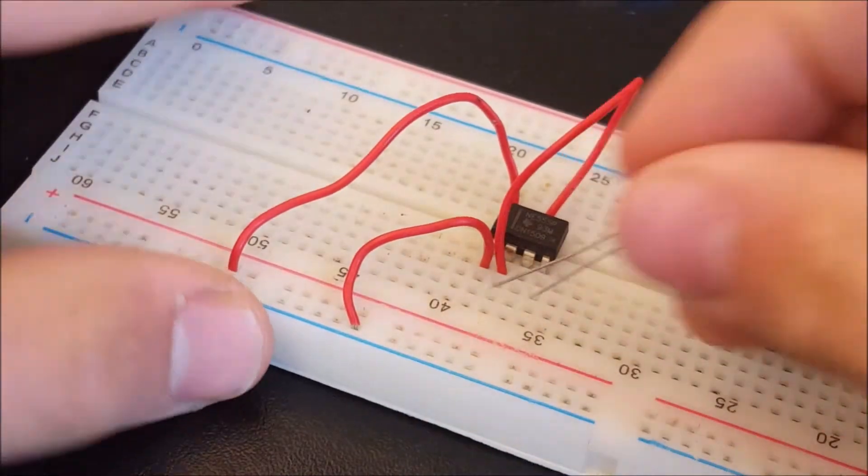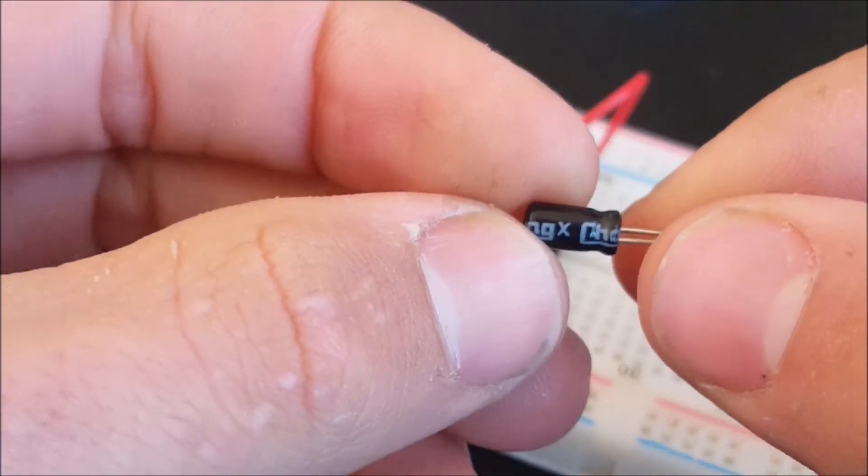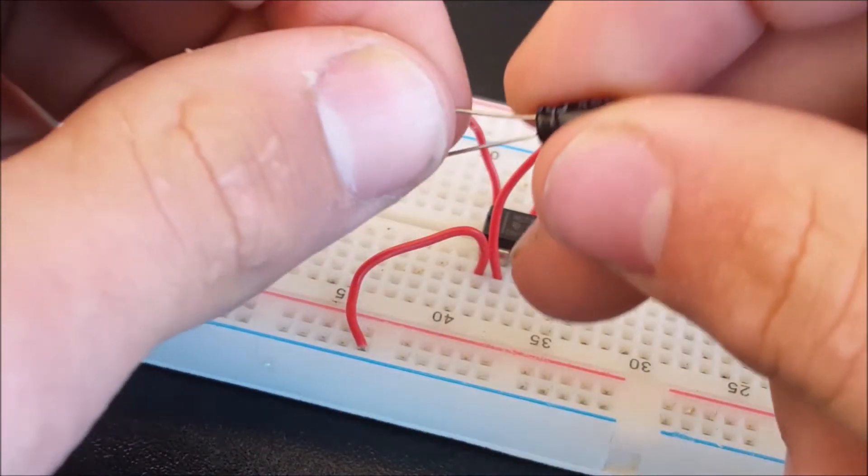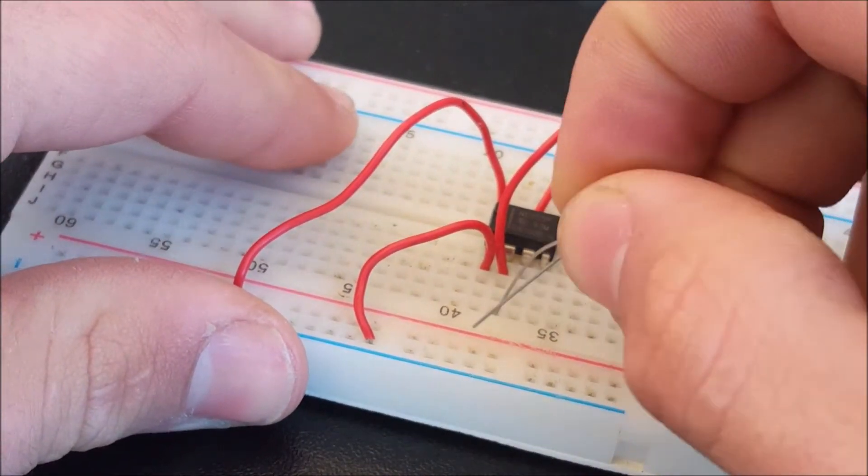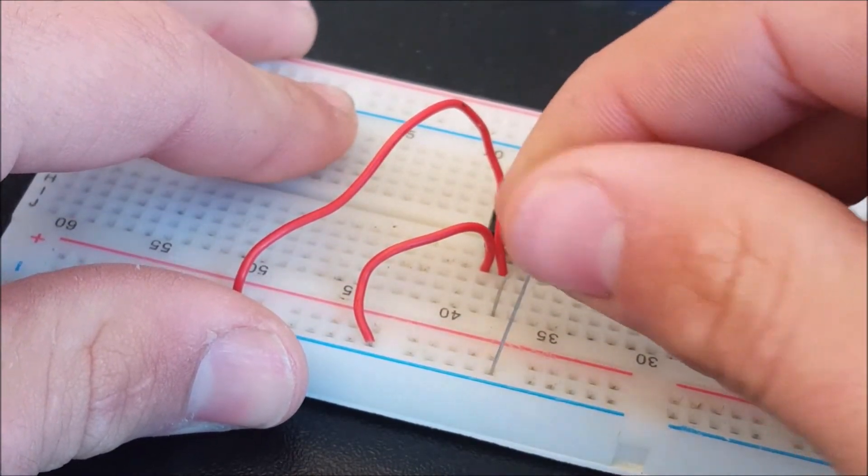After that, we are going to need to connect pin 6 to pin 2. Also, good practice is to cut out the connections that you made using the pencil. Now we are going to need to connect the capacitor from pin 2 to negative. In my case, I'm using a 1µF capacitor.